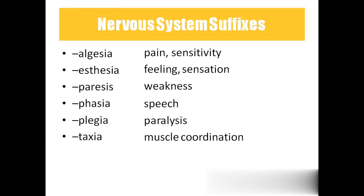Coming to the suffixes: algesia means pain or sensitivity, so analgesia means absence of pain or sensitivity. Aesthesia means feeling or sensation, so anesthesia means lack of feeling and sensation. Paresis means weakness. Phasia means speech. Plegia means paralysis. Taxia means muscle coordination — for example, ataxia means absence of muscle coordination.